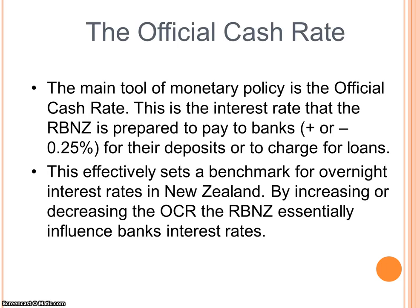The key tool for the Reserve Bank is the Official Cash Rate (OCR), announced every six weeks. It's basically an interest rate the Reserve Bank charges other banks for their deposits or loans, plus or minus a quarter of a percent. In a nutshell, it sets a benchmark for interest rates in New Zealand — if the OCR goes up, interest rates usually go up; if it goes down, interest rates go down. This applies to both loan rates and deposit rates.